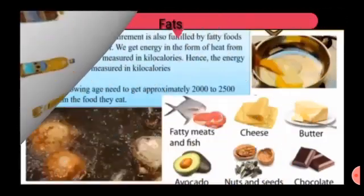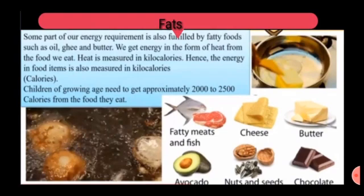Fats. Some part of our energy required is also fulfilled by fatty foods such as oil, ghee, and butter. We get energy in the form of heat from the food we eat. Heat is measured in kilocalories; hence, the energy in food items is also measured in kilocalories. Children of growing age need to get approximately 2000 to 2500 calories. Fat is a type of nutrient and just like protein and carbohydrate, your body needs some fat for energy, to absorb vitamins, and to protect your heart and brain health. Eating too much fat can raise cholesterol and cause various health problems.